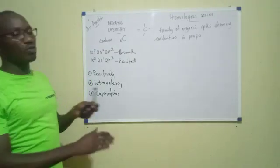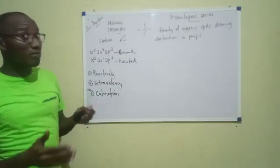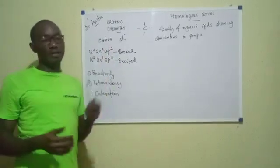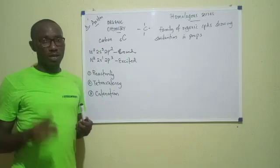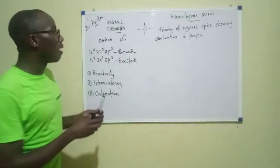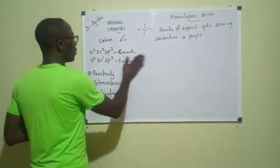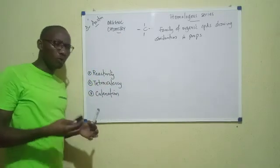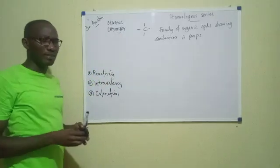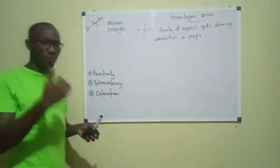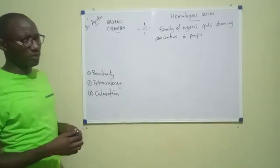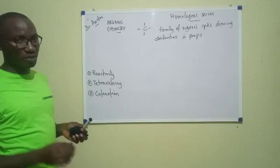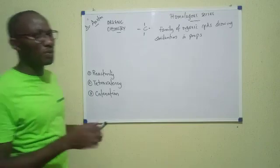There are different homologous series — different families of organic compounds in this aspect of chemistry. Now, what characteristics do we find within any homologous series? I'll list the characteristics of a homologous series and comment on them briefly. Number one: general formula. Number two: functional group. And number three: method of preparation.